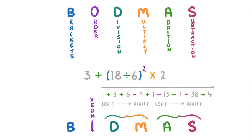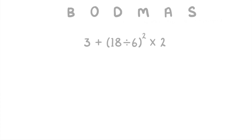Getting back to our example, the first thing we do is look at the brackets. The only operation inside the brackets is a divide, so we do that straight away: 18 divided by 6 equals 3. Now that 3 is the only thing inside the brackets, we can get rid of them, and our equation is now 3 plus 3 squared times 2.